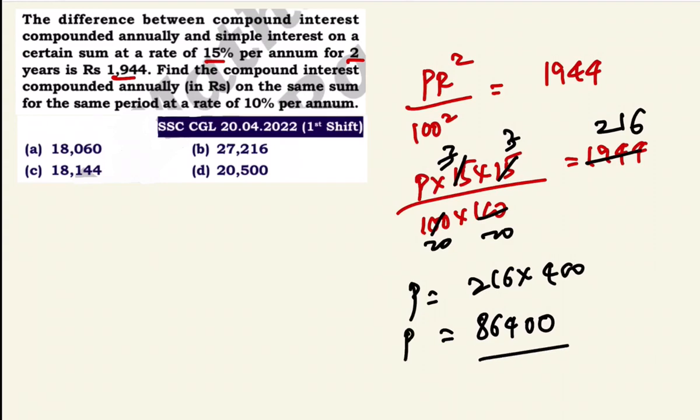On the same sum for the same period — two years. So principal comes out to Rs.8,640. Rate of interest is now 10%.